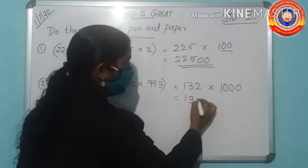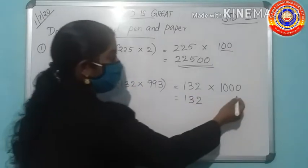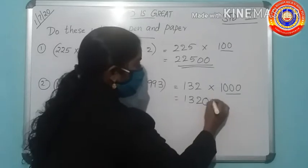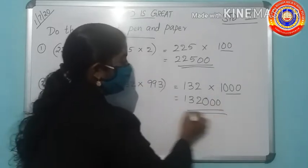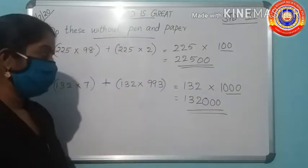132 into 993 plus 7 is 1000. Then 132 into 1 is 132 and how many zeros? Three zeros. Add the three zeros. You got the answer 132,000. All of you understood?